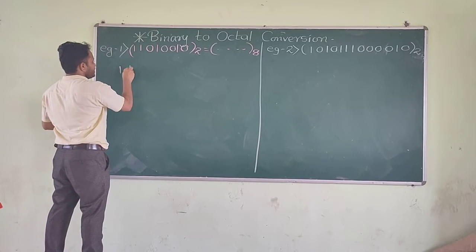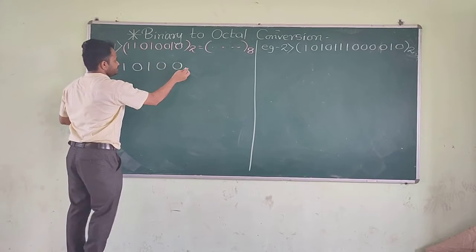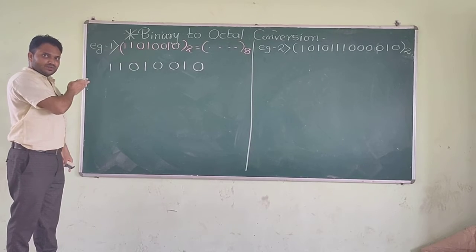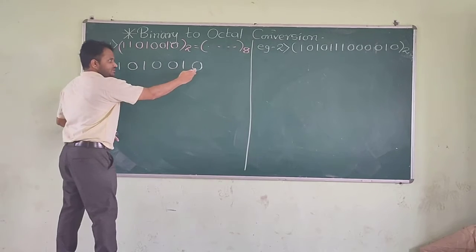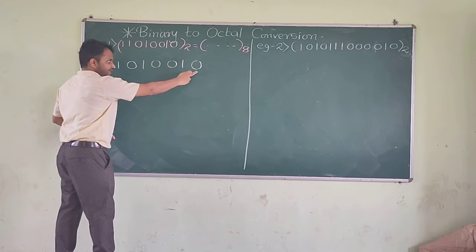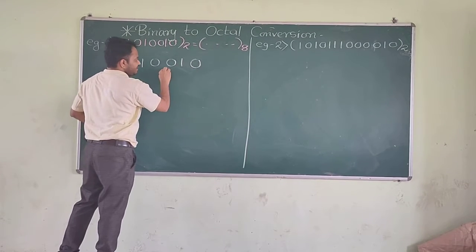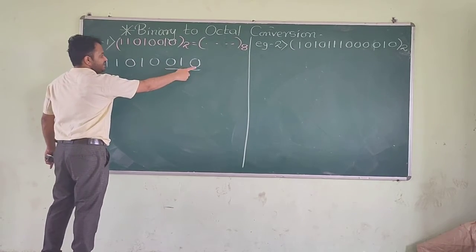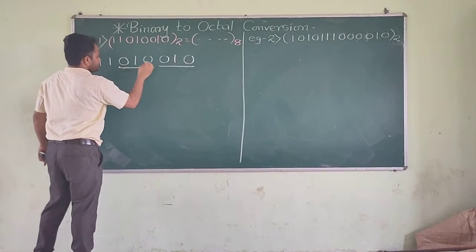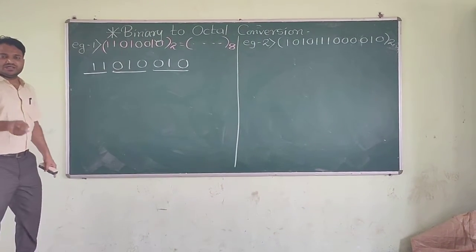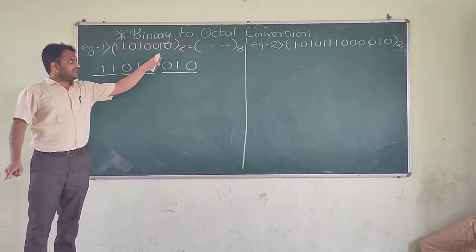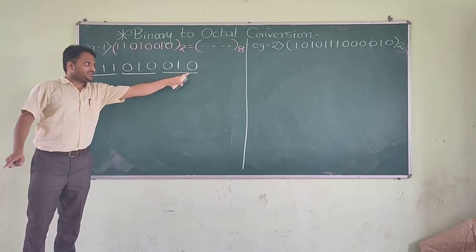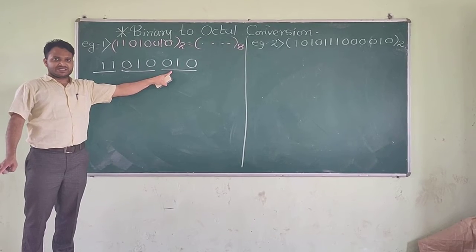I will again write the number given. This is the number given. What I have to do is, from rightmost towards leftmost, I have to make a group of 3 bits. Because the base of octal is 8, which is 2 to the power 3, so I need to make a group of 3. When we have a binary number, we have to make a group of 3.